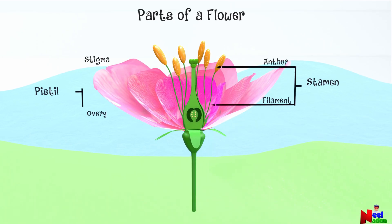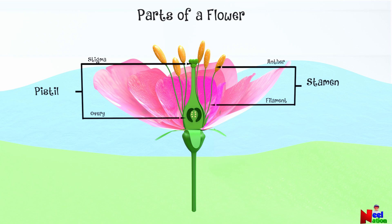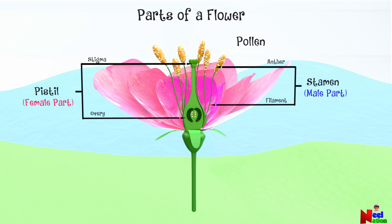The parts of the plant that help in reproduction are stamen and pistil. Stamen is the male part of the plant and pistil is the female part. The stamen has tiny specks or dust called pollen and has the special ability to make seeds. Inside the ovary, the female part of the plant, there are tiny eggs or ovules.